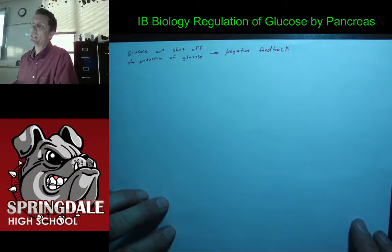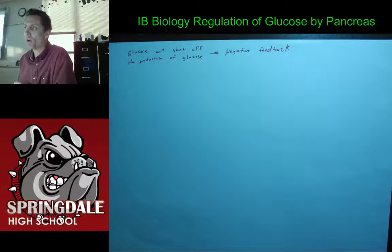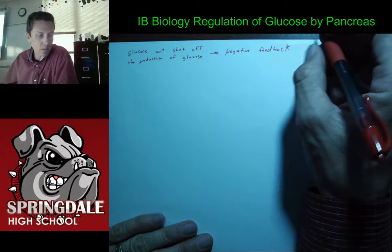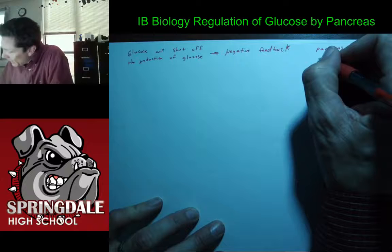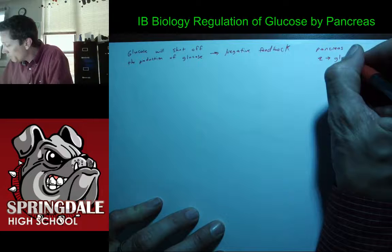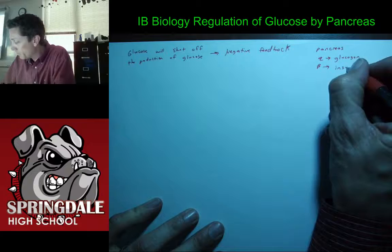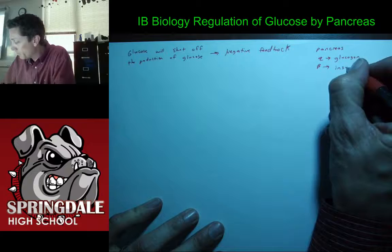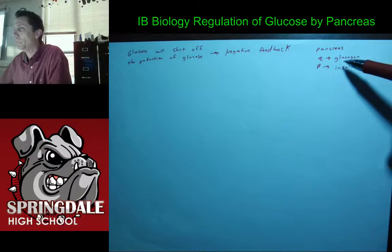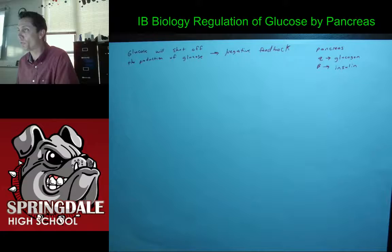Sometimes they ask questions about target cells and give an example of how a hormone can act on target cells, so we're going to be talking about that also. You have to commit this to memory: in the pancreas you've got two types of cells — alpha cells and beta cells. Alpha cells are going to produce glucagon, and beta cells are going to produce insulin. We just have to remember that: alpha cells produce glucagon, beta cells produce insulin.